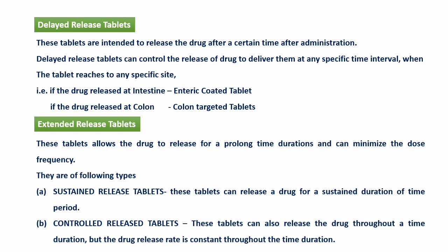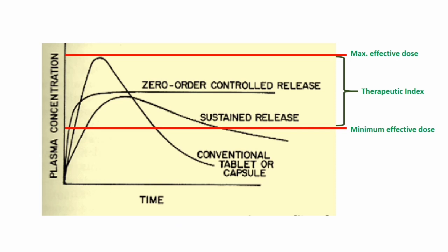Drug release pattern graph में आप देख सकते हैं the difference in the release pattern from sustained release and controlled release tablets। Controlled release tablet एक constant manner में drug को release करती है, जबकि sustained release tablet की release rate में हल्का variation होता है — लेकिन drug की concentration therapeutic window में ही रहती है, यानि between minimum and maximum effective concentration। So this is about the various types of tablets and their classification based on various features.